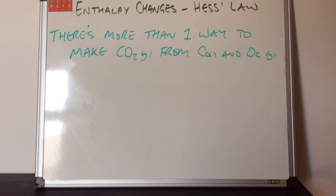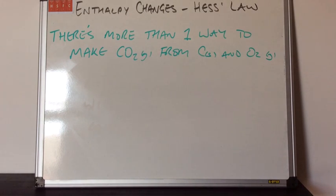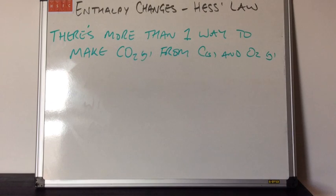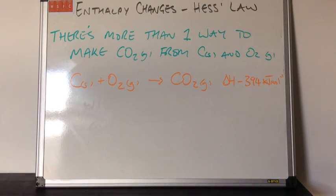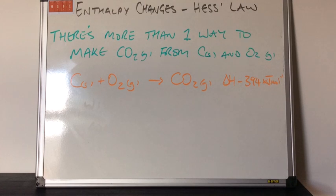In this video we're looking at enthalpy changes and Hess's law. In green, there's more than one way to make carbon dioxide gas from carbon solid and O2 gas. We'll start with the method we're probably most familiar with: the reaction between one mole of carbon solid and one mole of O2 gas making one mole of CO2 gas.